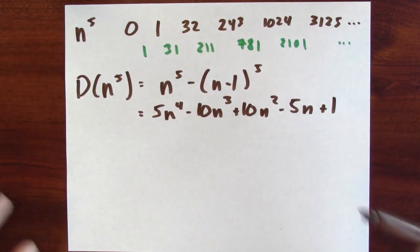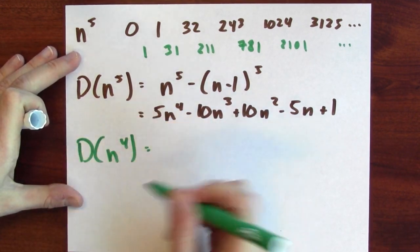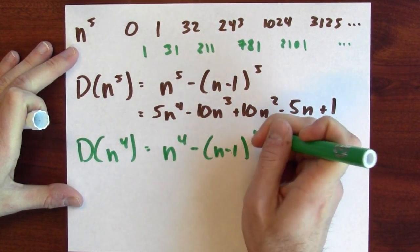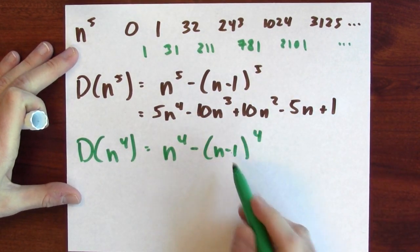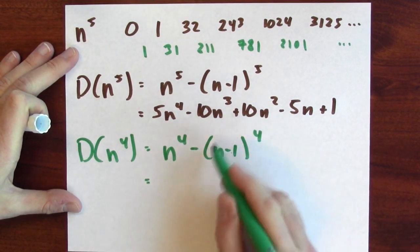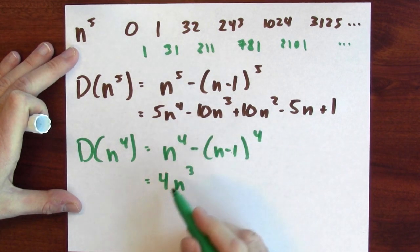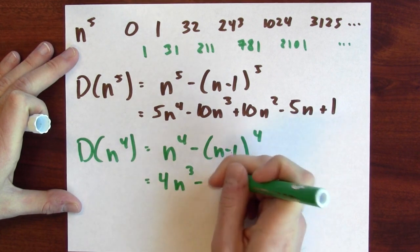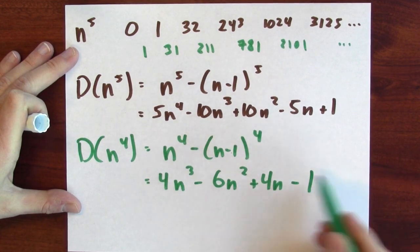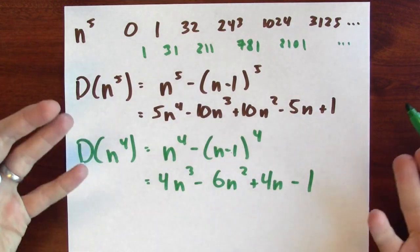Now I'll play the same kind of game for a different list of numbers — the differences in the fourth powers. That's the fourth power of n minus the fourth power of n minus 1. Expanding this out, n to the fourth cancels, so the highest power that survives is an n cubed term with a coefficient of 4, giving 4n cubed minus 6n squared plus 4n minus 1. This formula tells me the differences between subsequent fourth powers.